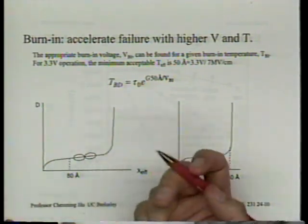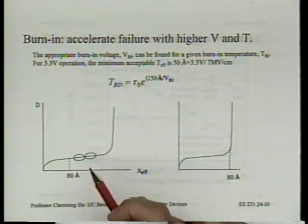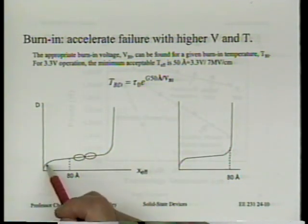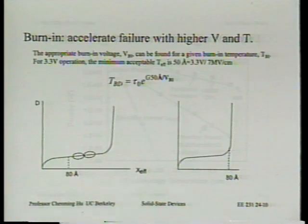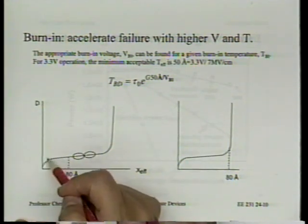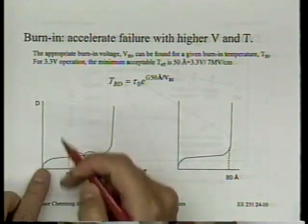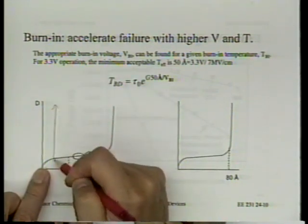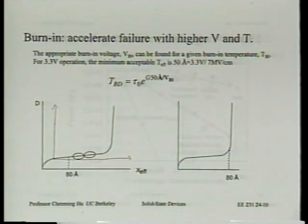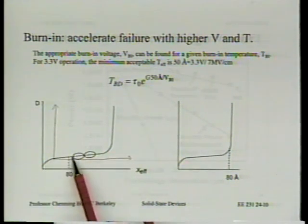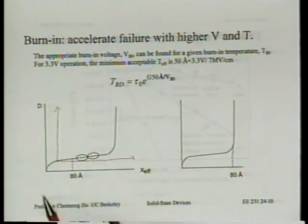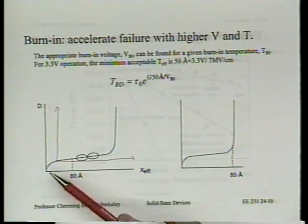The hope is that without burn-in, early failing devices would fail after only a few months of operation. If we perform an accelerated test equivalent to a few months — not necessarily 10 years — we get rid of all these early failures. We now have a new curve with very few percentage failing in the next three months, and three months is a small fraction compared to the 10-year design life.